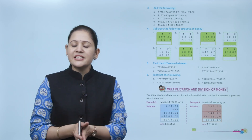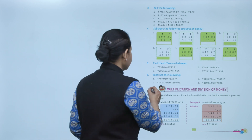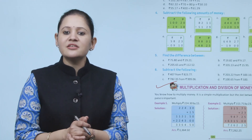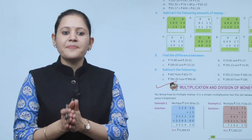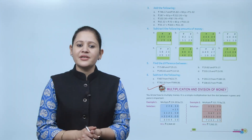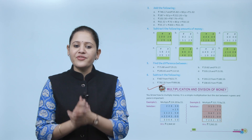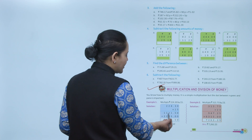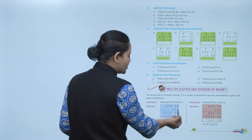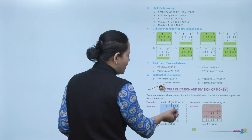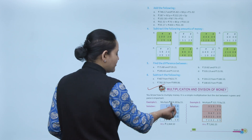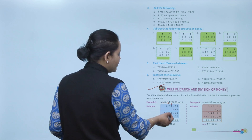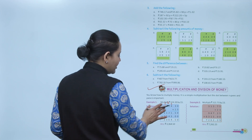Next is multiplication and division of money. Multiplication of money is simple multiplication, but the decimal point between rupees and paisa is important. Example: multiply rupees 224.30 by 15. First multiply by 5: 5 into 0 is 0; 5 into 3 is 15, write 5 carry 1; put decimal; 5 into 4 is 20 plus 1 is 21, write 1 carry 2; 5 into 2 is 10 plus 2 is 12, carry 1.